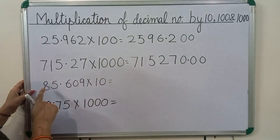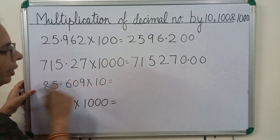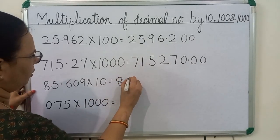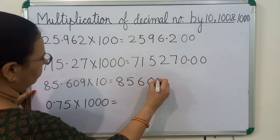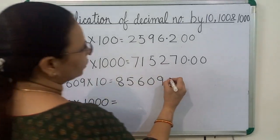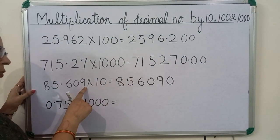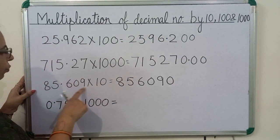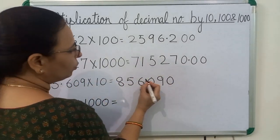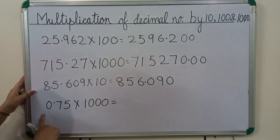Now we will multiply 85.609 by 10. We will get 85,609. 10 has 1 zero, so we will write here 1 zero. You can see in the question the decimal point is before 3 digits, so in the answer also we will put the decimal point before 3 digits.